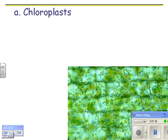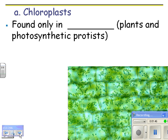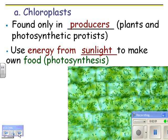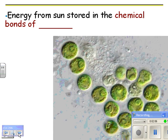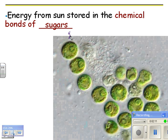Looking at chloroplasts first: those little green things inside the cell are chloroplasts, and they evolved from bacteria. They're found only in producers — plants and photosynthetic protists. There are producers that are bacteria, but bacteria do not have membrane-bound organelles, and chloroplasts are indeed membrane-bound organelles. Chloroplasts use energy from sunlight to make their own food, and that energy from the sun is stored in the chemical bonds of sugars like glucose.